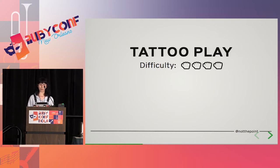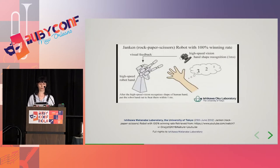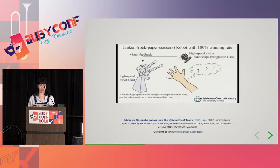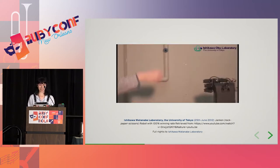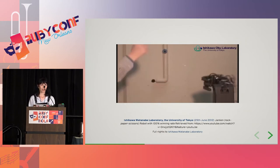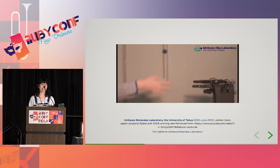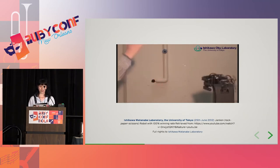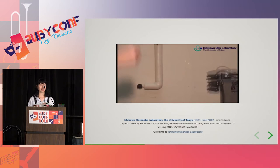Of course, bots are unable to employ these strategies. What techniques could a bot use? Well, there's this bot which has a 100% winning rate — in one millisecond it can recognize the position and move of the opponent's hand and immediately play a counter move. But although impressive, I would say this is clearly cheating. We will be looking at techniques to decide what the opponent will play before they play it.